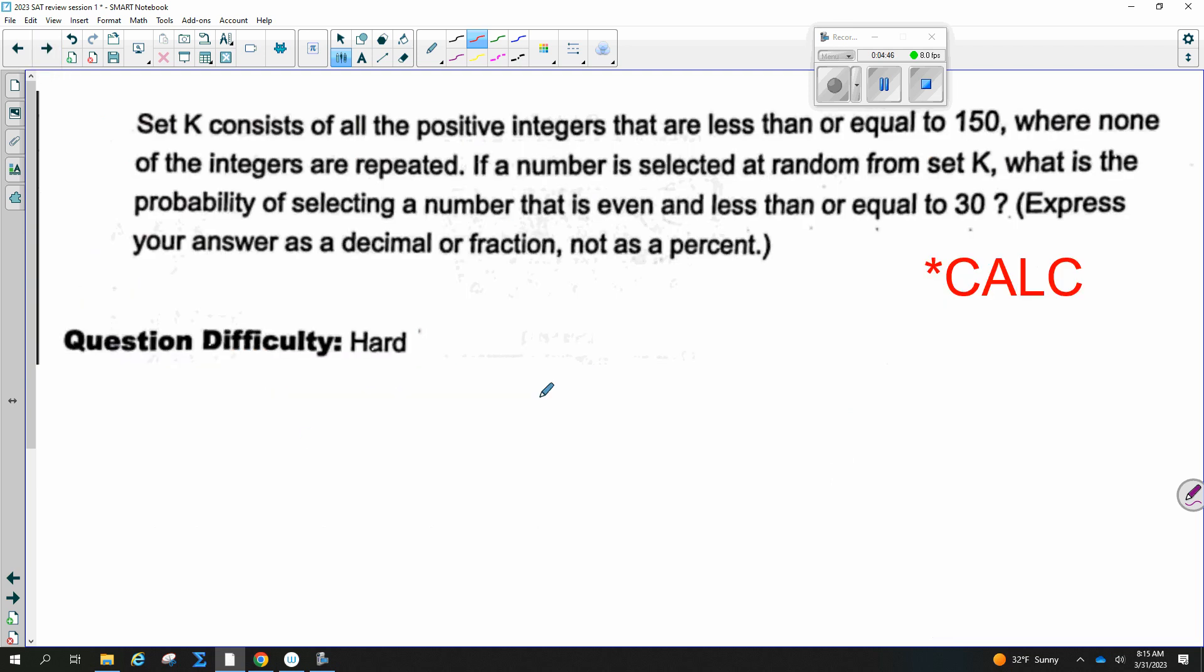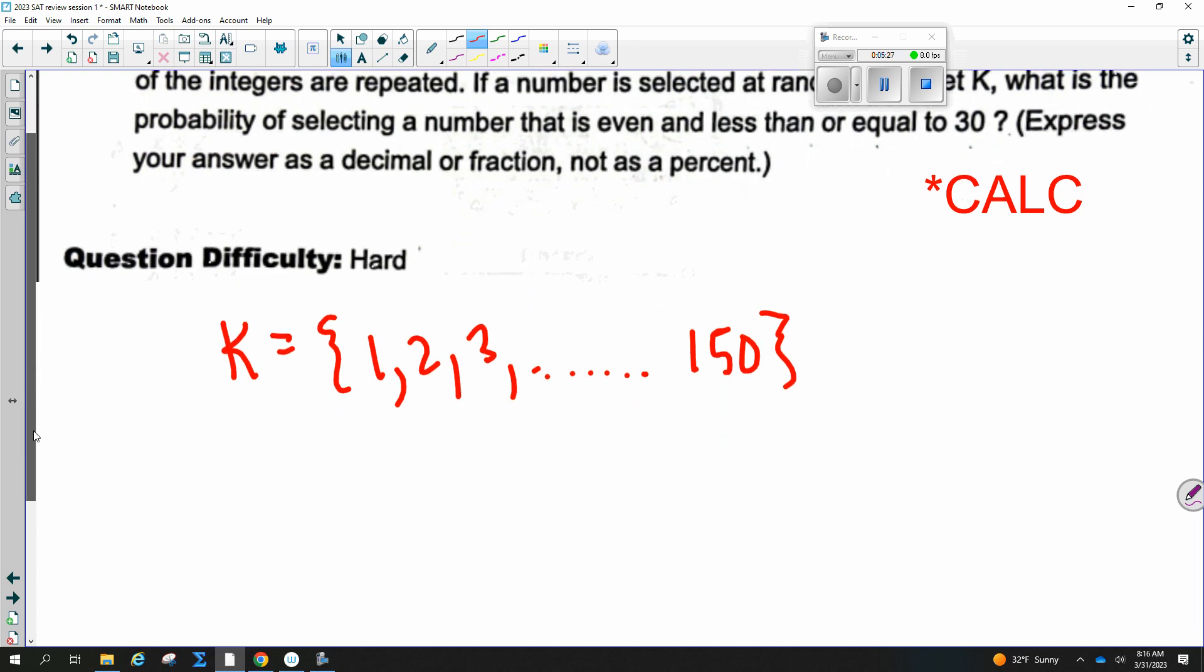Set K consists of all the positive integers that are less than or equal to 150, where none of the integers are repeated. If a number is selected at random from set K, what is the probability of selecting a number that is even and less than or equal to 30? So K is all positive integers that are less than or equal to 150. So positive integers start at 1, and we go all the way up to 150. None of the integers are repeated. If a number is selected from this set, what's the probability from this set of selecting a number that is even and less than or equal to 30?